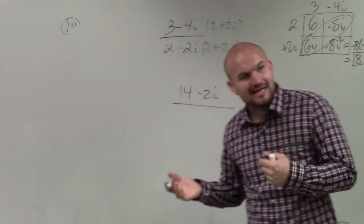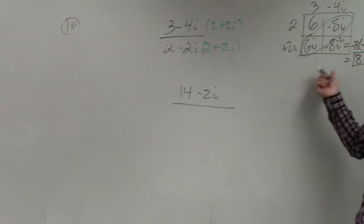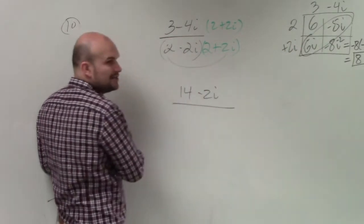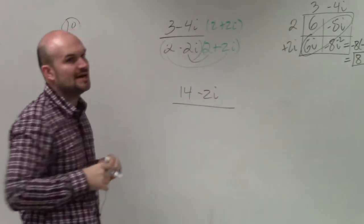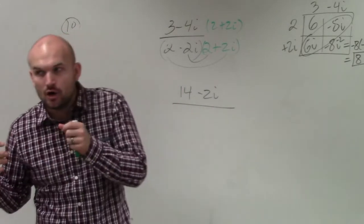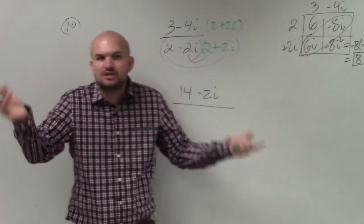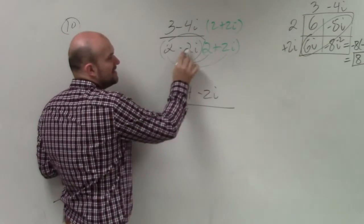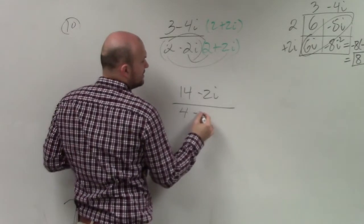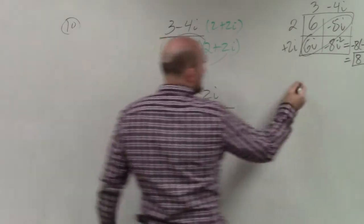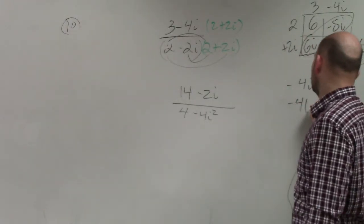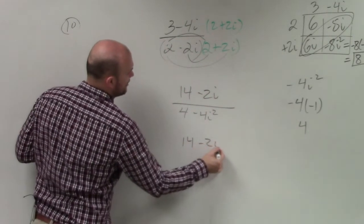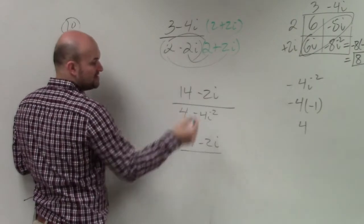In the denominator, guys, I can go ahead and do the exact same thing, Erica, using the box method. But what's important about this is that the middle terms are going to cancel out. When you do 2 times 2i, you get 4i. When you do negative 2i times 2i, you get negative 4i. So you're going to have positive 4i and negative 4i, which are going to add to 0. So we really don't need to use the whole thing. All we simply need to do is multiply 2 times 2, which is 4. And then negative 2i times 2i, which would be negative 4i squared. But again, negative 4i squared, i squared is equal to negative 1, which is positive 4. So really, it's 14 minus 2i over 4 plus 4, which is 8.